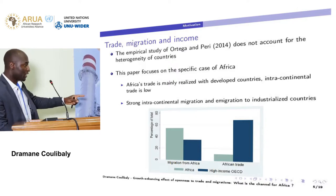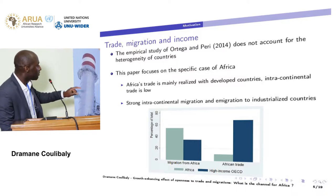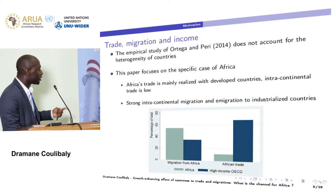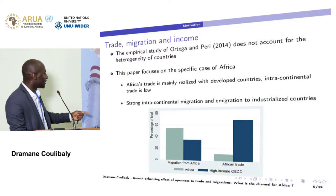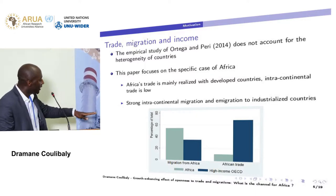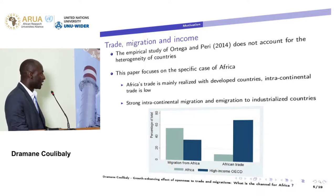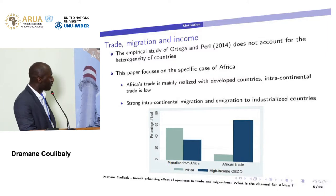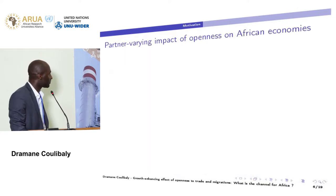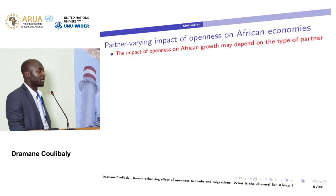This is illustrated by the following figure. Intracontinental immigration represents more than half of total African immigration. At the same time, immigration from Africa to OECD countries represents more than 30 percent of African immigration. Concerning trade, intracontinental trade is less than 20 percent of total Africa trade, while trade with developing countries represents more than 60 percent. So one can think that the impact of openness on Africa's growth may depend on the type of partner.